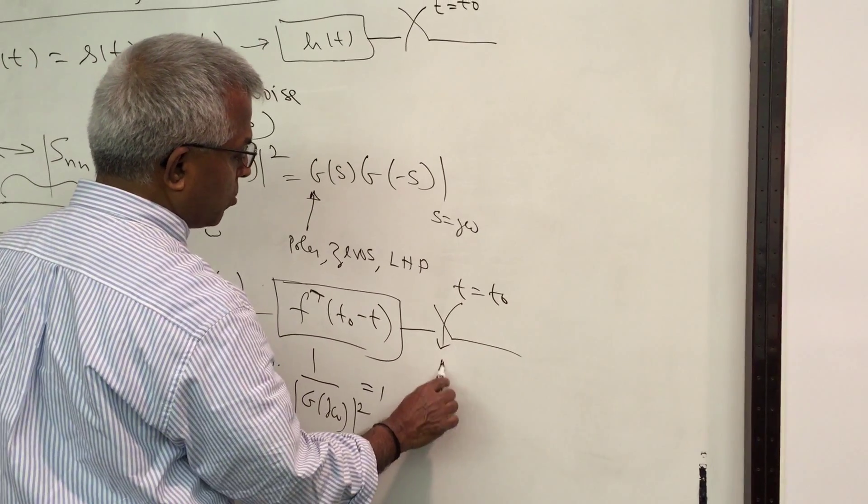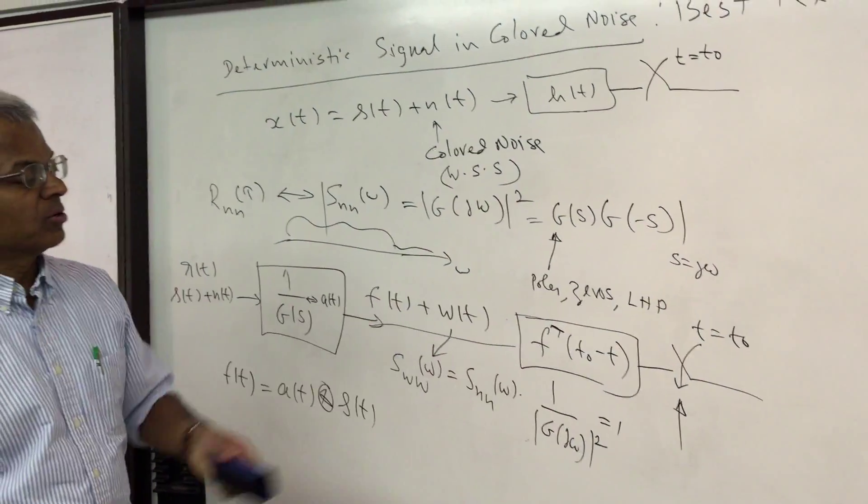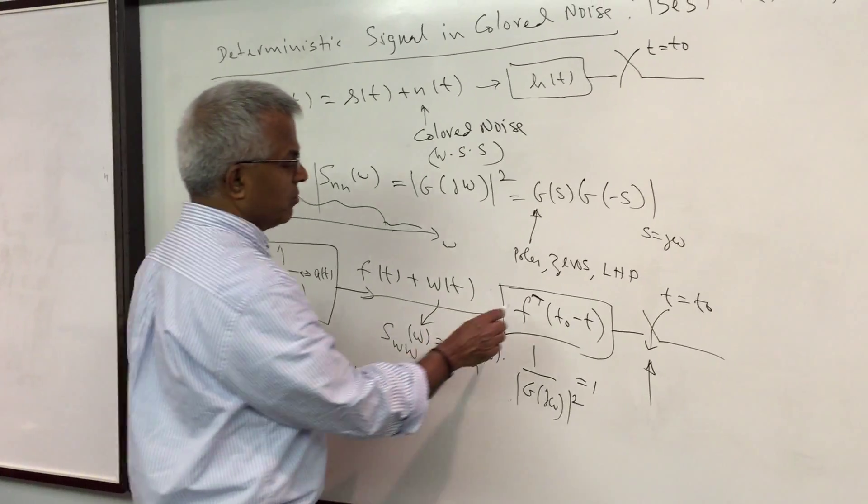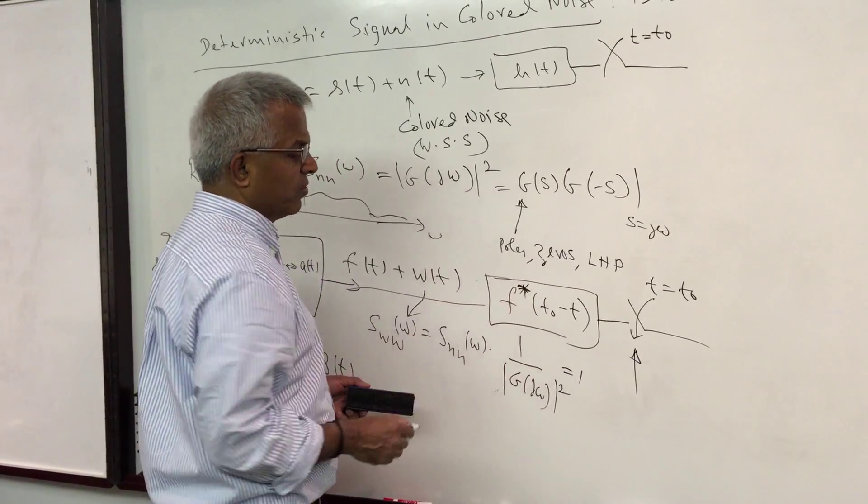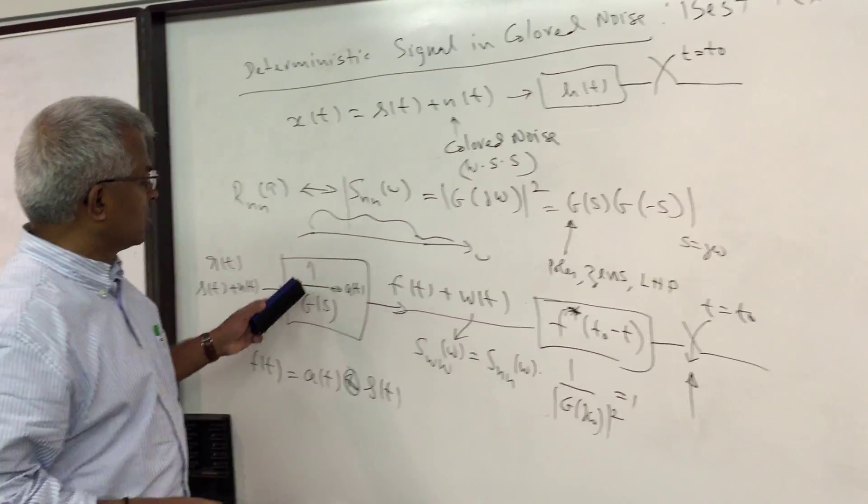So here the advantage is whatever is the overall output signal, the output signal to noise ratio is maximized by this filter which is the complex conjugate f*(-t), and so the concatenation of this whitening filter followed by matched filter is the best receiver.